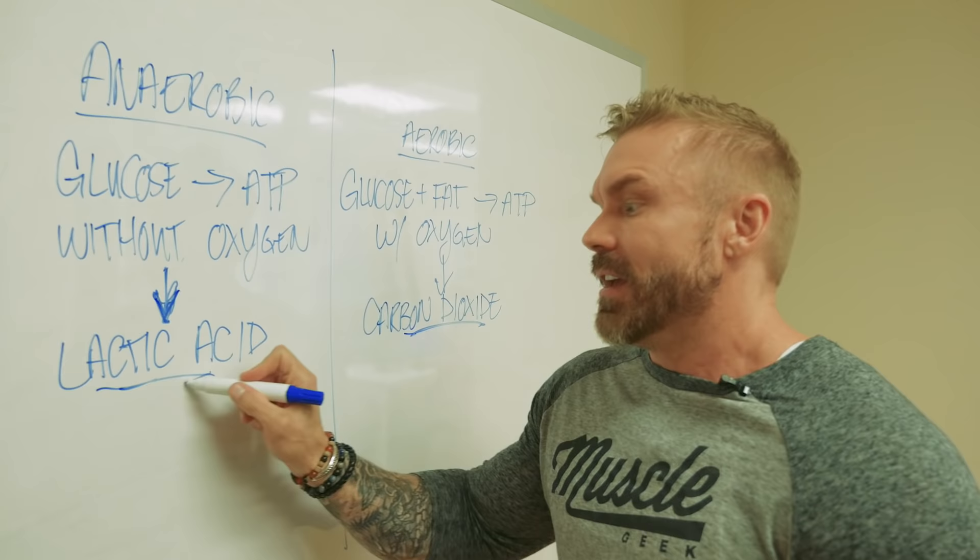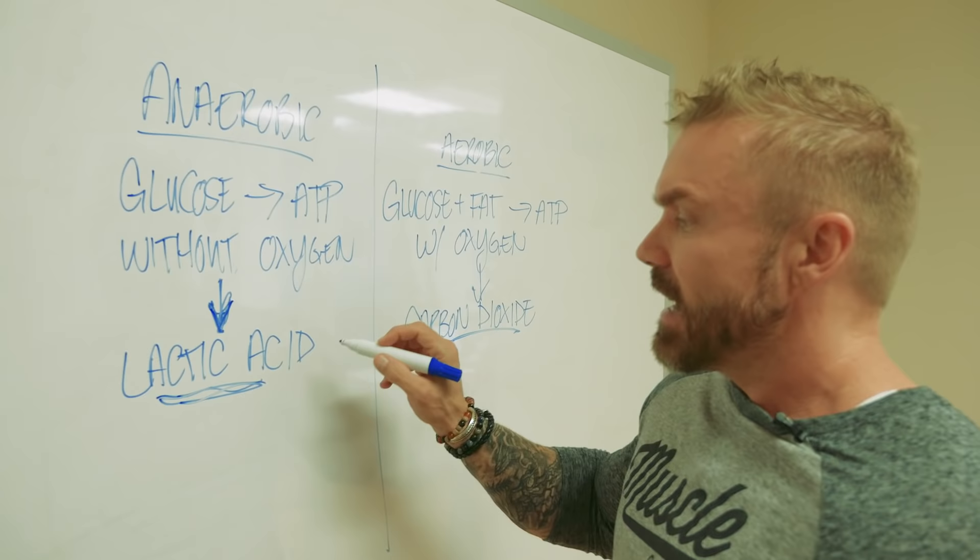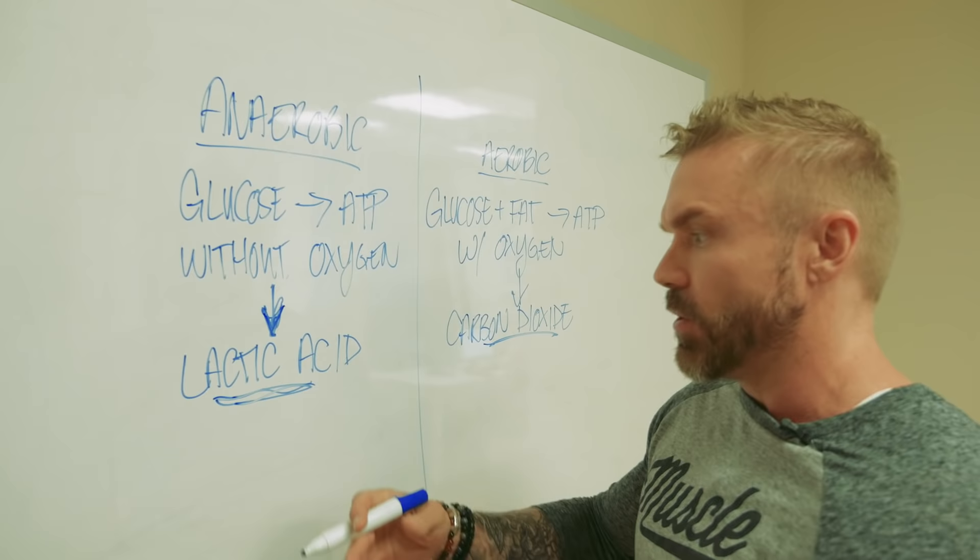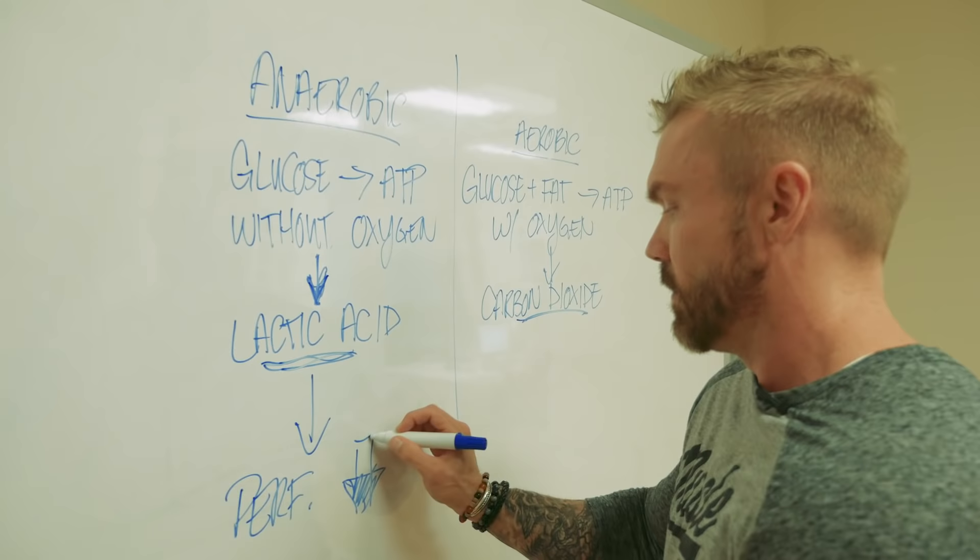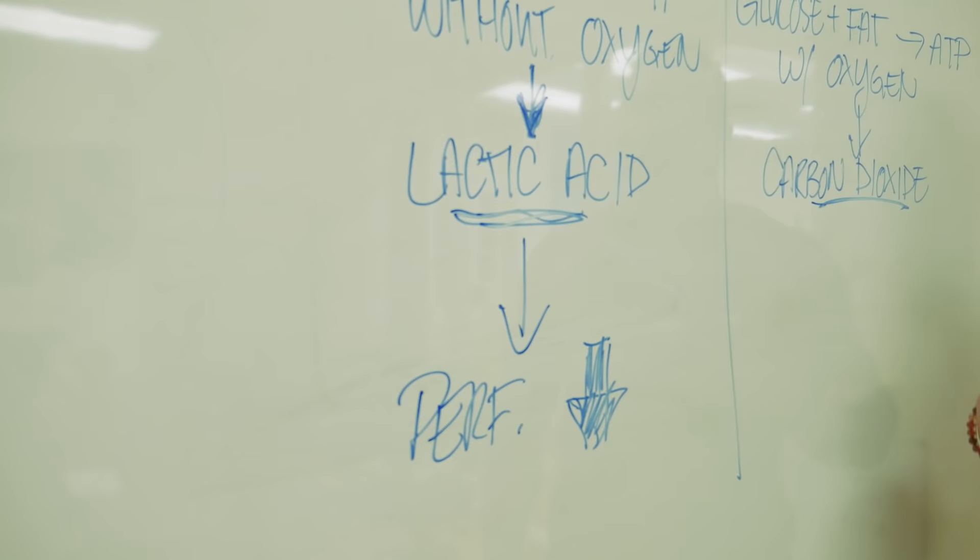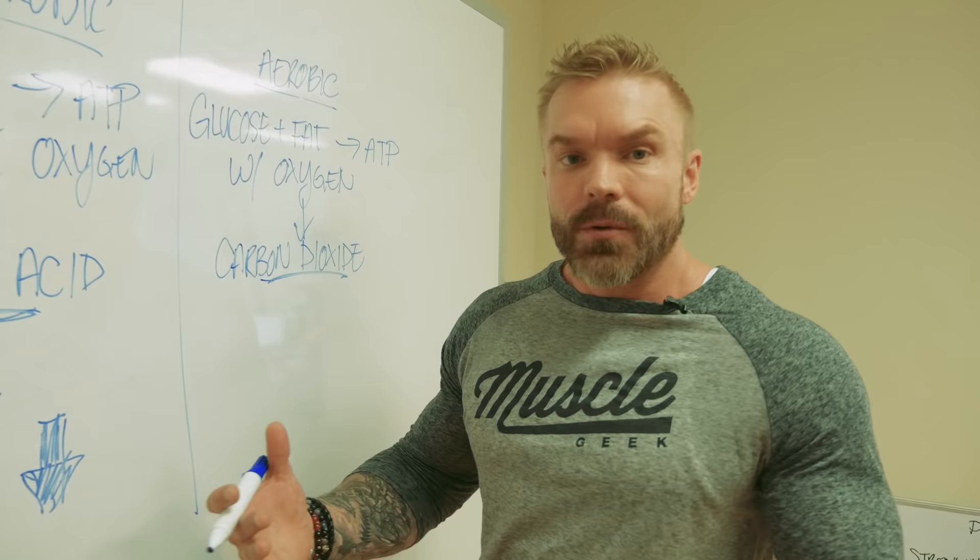If we're over here and we're working out hard, in the middle of that set, muscle starts to burn, that's lactic acid. A comparison here: lactic acid, we're going to get into this in a second, is not the enemy but it does slow down performance. So as lactic acid starts to build up, what happens? Well our performance, our muscles' performance goes down. Performance goes down when lactic acid starts to build up.